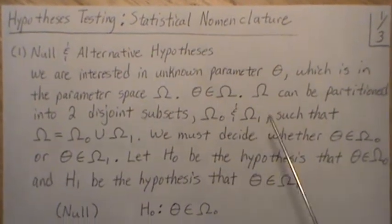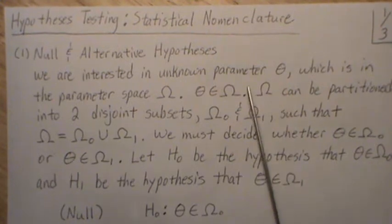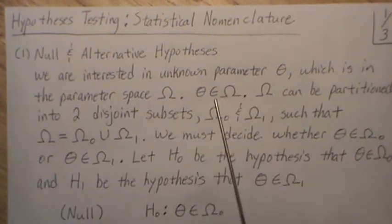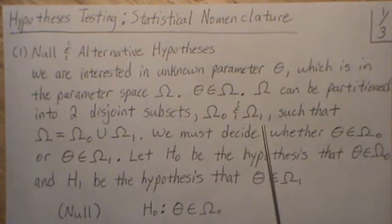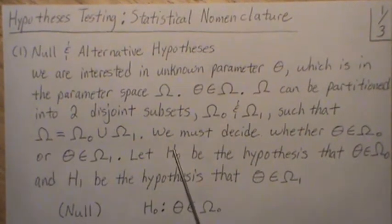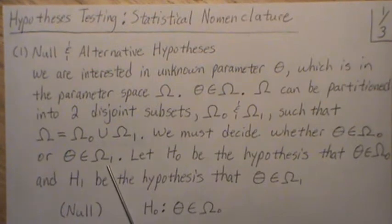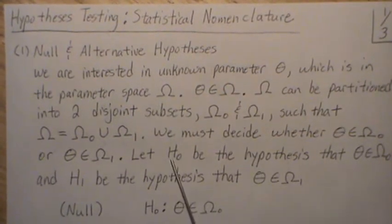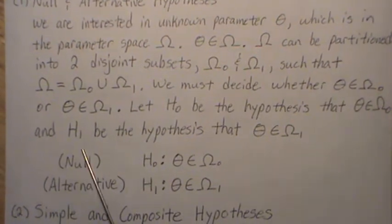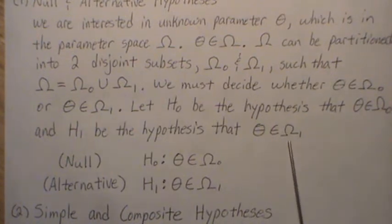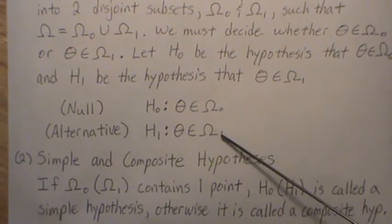So first let's look at the null and the alternative hypothesis. Ultimately we're interested in an unknown parameter called theta, and it lives in a parameter space called omega. Now omega can be partitioned into two distinct subsets, omega zero and omega one, such that the union makes up the entire parameter space. Our goal is we must decide whether the unknown parameter lives in omega zero or omega one. Let's let H naught be the hypothesis that theta lives in omega zero, and let H one be the hypothesis that theta lives in omega one. The first one we always call the null hypothesis and the second one we call the alternative hypothesis.